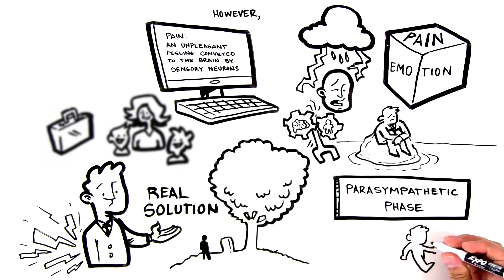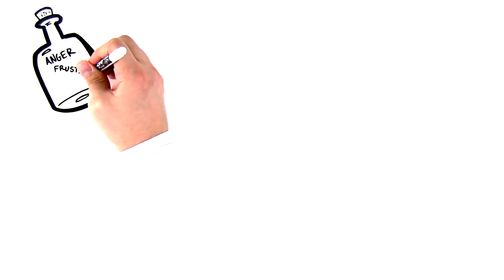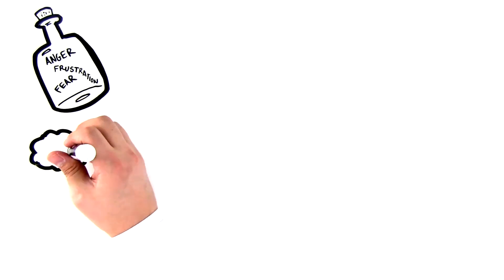Painkillers provided John temporary relief, yet they never allowed John to be truly liberated from his traumatic past. John continued to bottle his anger, fear, and frustration, creating an emotional blockage in his body.